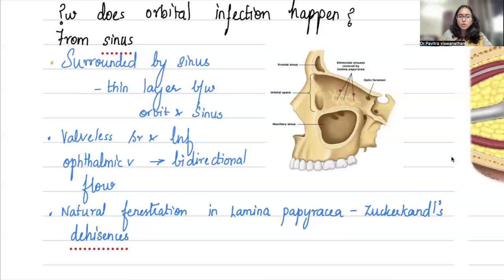You have a very thin bone between the ethmoid sinus and your orbit. If you see, there are multiple small holes—these are all natural foramina called Zucker-Candel's dehiscences. You have multiple veins going between the orbit and sinuses, and these veins are valveless, which means bidirectional flow is possible. Because of these three reasons—orbit surrounded by sinuses, veins with bidirectional flow, and multiple holes—you have easy spread of infection from sinus to eye. Usually sinusitis is the preceding thing before orbital cellulitis happens.